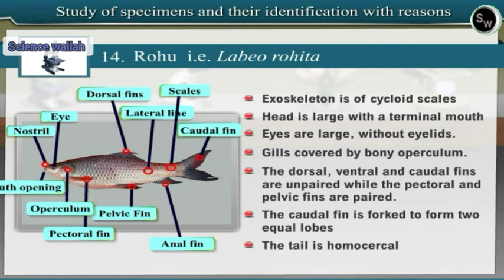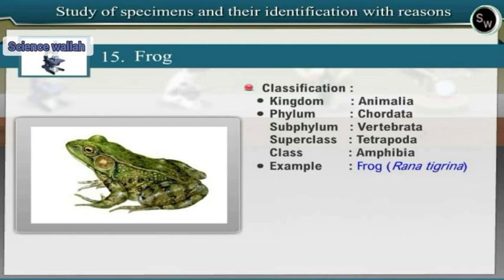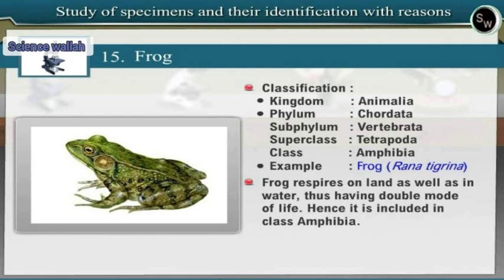Specimen 15: Frog (Rana tigrina). Observe the specimen of frog. The body of frog is bilaterally symmetrical and divided into head and trunk. Frog belongs to phylum Chordata, subphylum Vertebrata, superclass Tetrapoda and class Amphibia. Frog respires on land as well as in water, thus having double mode of life, and hence it is included in class Amphibia. The body is divisible into head and trunk. Tail is absent.